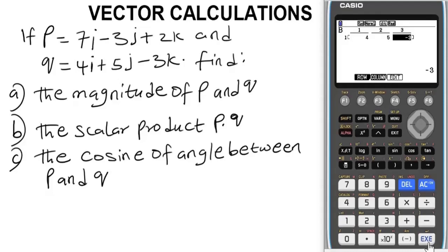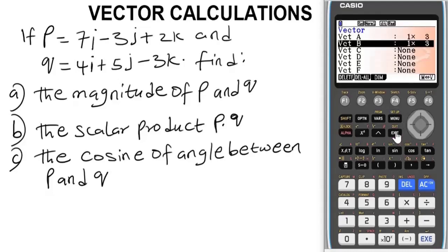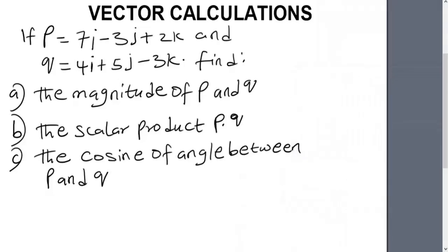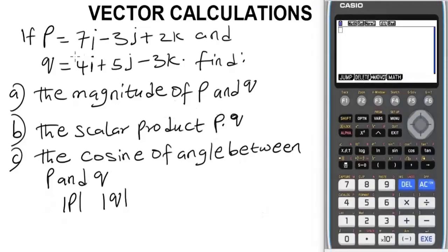Note that as I am inputting the values they are being stored on the calculator automatically. Press exit and begin to find what we need — starting with the magnitude of vectors P and Q. Notice this symbol: some examiners use double vertical bars to denote magnitude, while others may use a different sign. Both represent the magnitude of a vector, so take note of that.